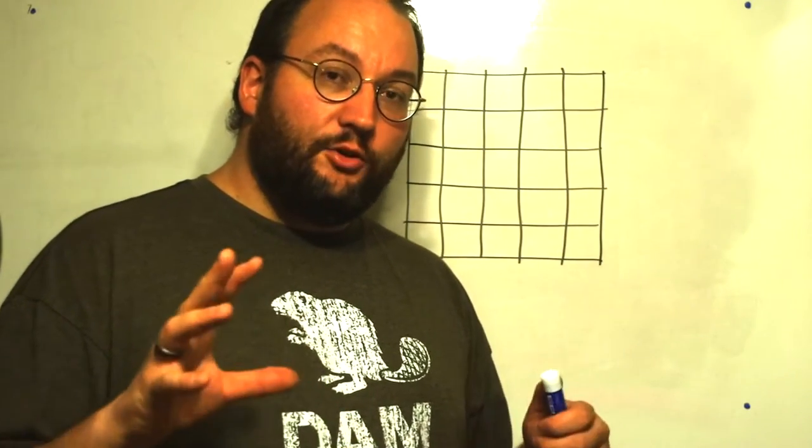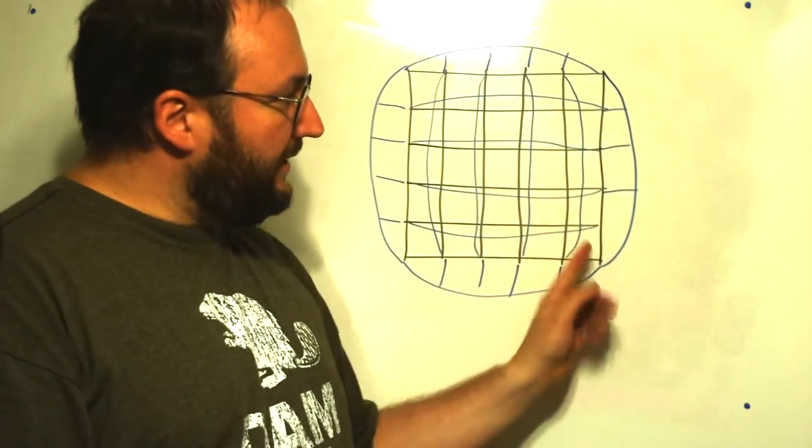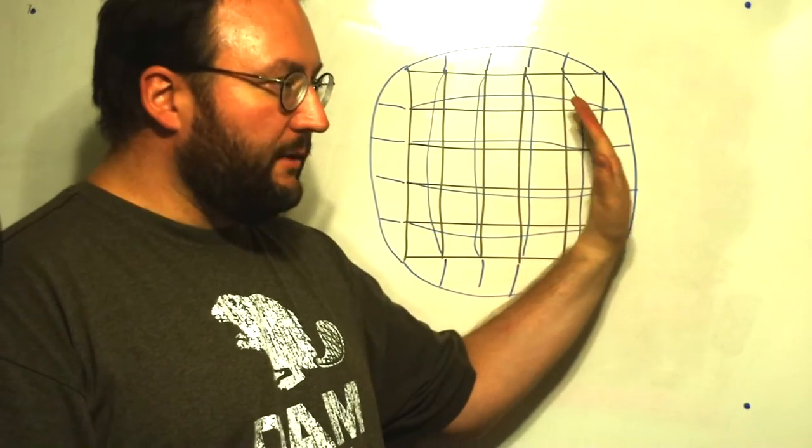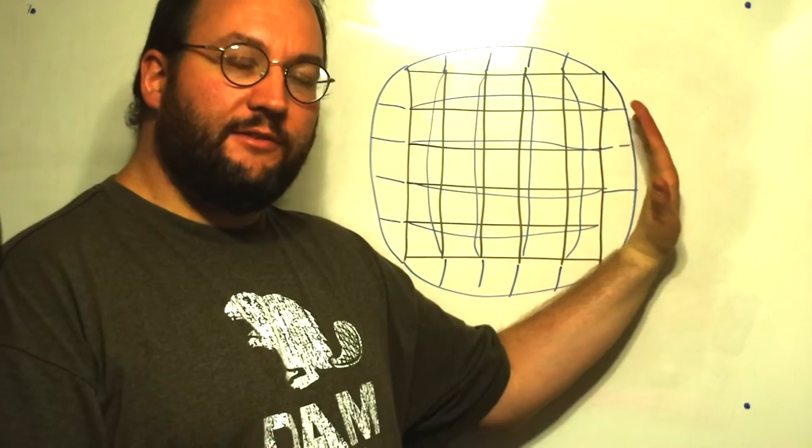Barrel distortion means that your straight lines start to bow outward. This is going to be very exaggerated. Basically, your straight lines are being pushed outward, to bow outward in this direction.